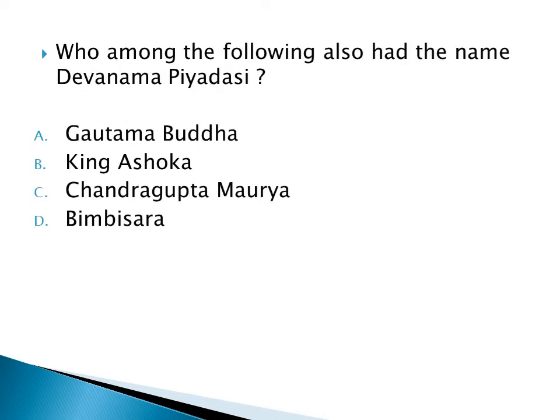Who among the following also had the name Devanama Priyadarshi? Option A: Gautam Buddha, Option B: King Ashoka, Option C: Chandragupta Maurya, Option D: Bimbisara. The right option is Option B: King Ashoka. King Ashoka is also known by the name Devanama Priyadarshi.